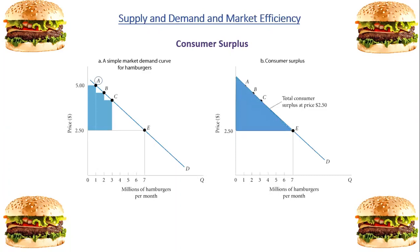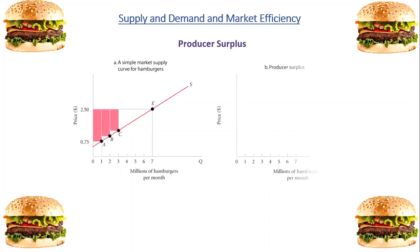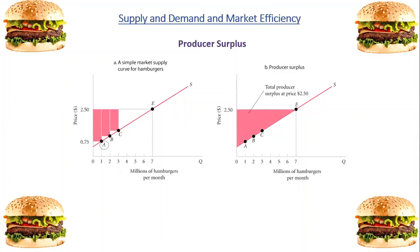Moving to producer surplus: producer surplus is the difference between the current market price and the full cost of production for the firm. Here we are considering the producer or the supplier, which is why we're looking at the supply curve. At point A, some producers are willing to produce hamburgers for a price of $0.75.